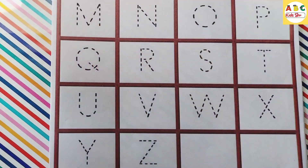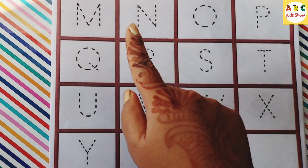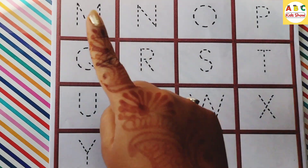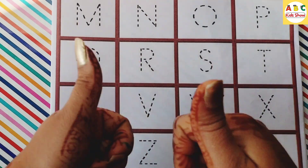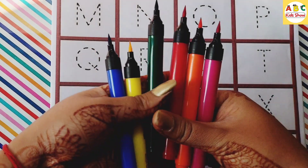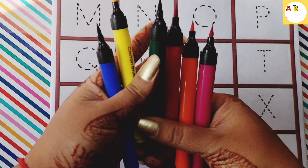Hi kids, welcome back. Today we are going to learn capital ABC from M to Z. Let's start with colors.